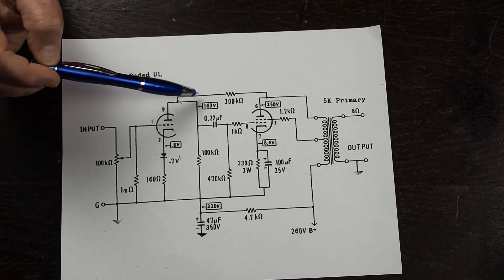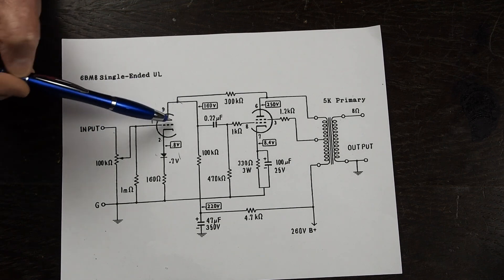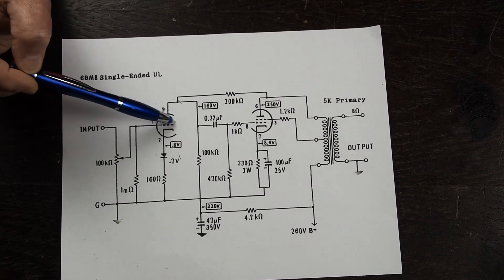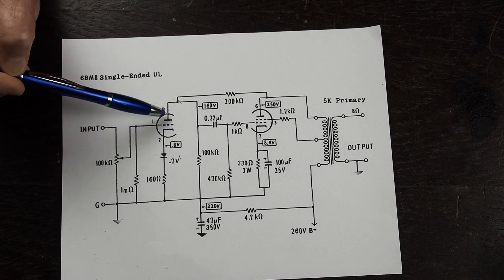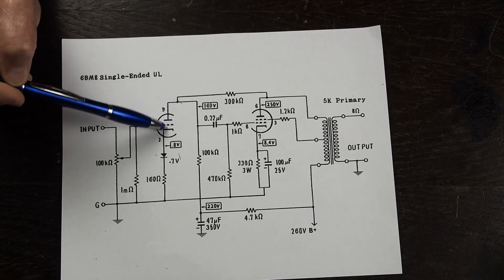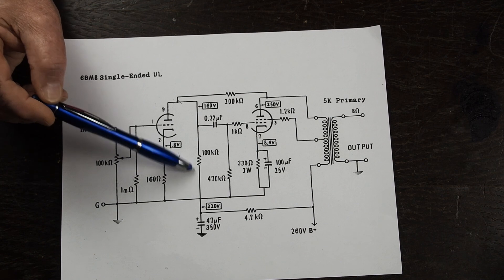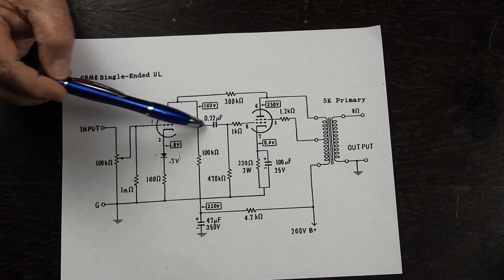The way that this tube amplifies the sound that comes on the input is when you vary the voltage here it varies the current that runs through this tube and as the current varies that goes through the tube.